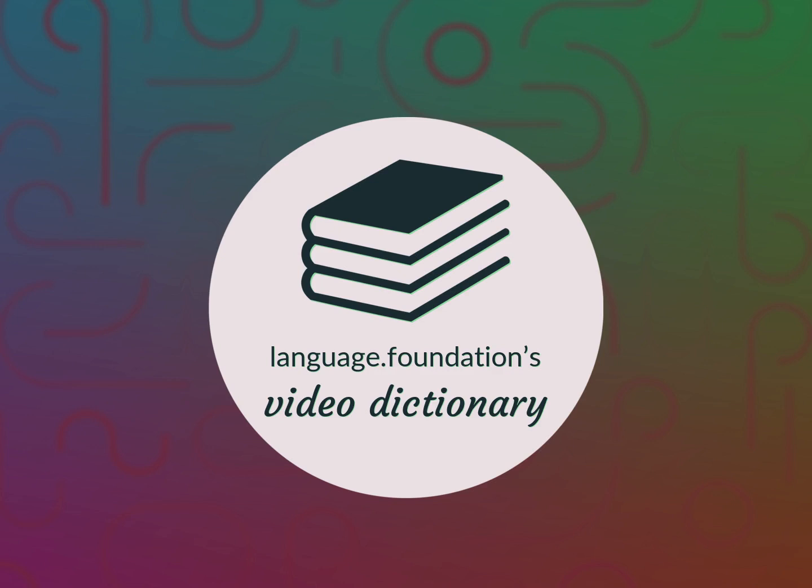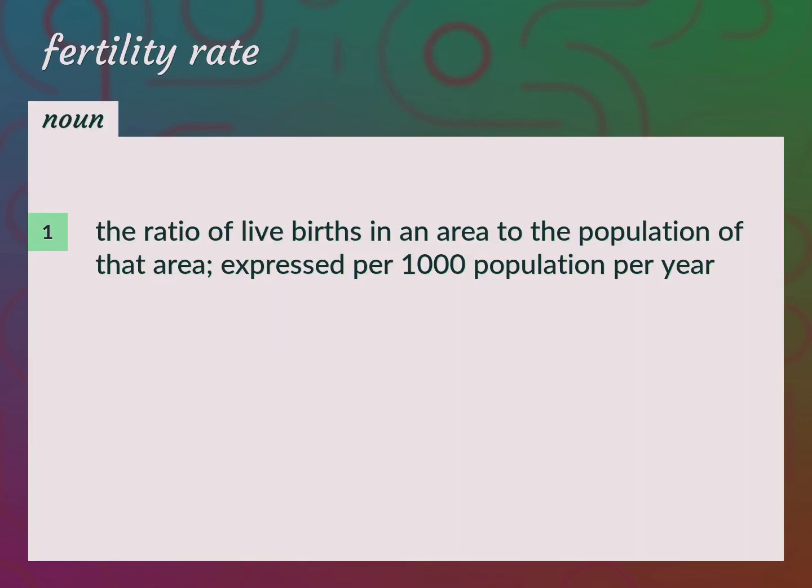Language.Foundation's Video Dictionary, helping you achieve understanding. The ratio of live births in an area to the population of that area, expressed per 1,000 population per year.